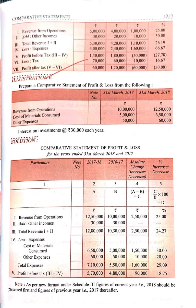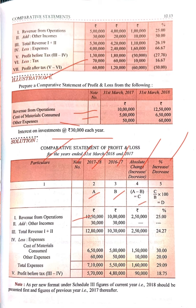Revenue from operations is given, cost of material consumed is given, other expenses is given, and interest on investment is at the rate of 30,000 each year. The format columns are: Particular, Note Number, Current Year, Previous Year, Absolute Change (A minus B = C), and Percentage Change (C upon B into 100 = D).